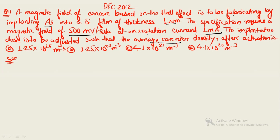This is a Hall effect question. Directly write the formula for Hall voltage: V_H equals IB divided by Q times n times D, where D is the thickness of the sensor, n is the number of charge carriers per unit volume, Q is the charge, I is the current through the sensor, and B is the magnetic field strength.